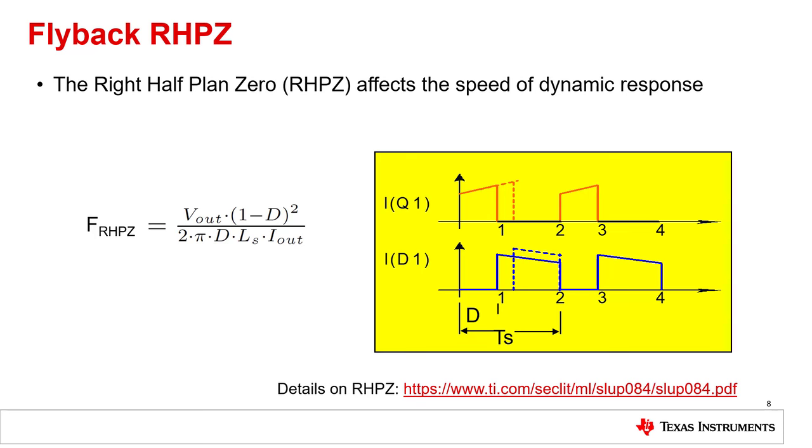In a fixed frequency converter, longer on time means less off time. So the amount of energy delivered to the output in this cycle is less compared to the one before. If now the converter would react on this additional reduced power delivery, it would command another increase in duty cycle causing even less power to be delivered.